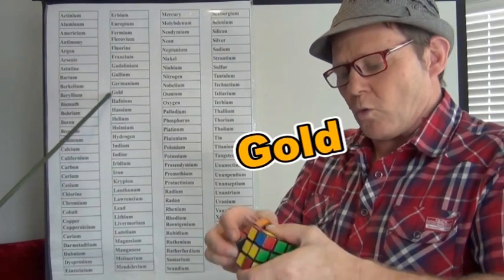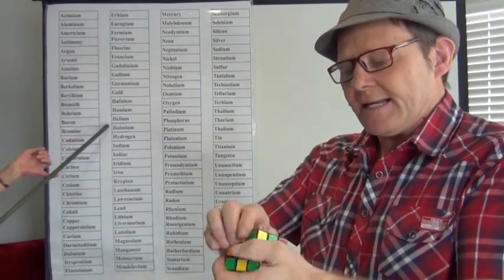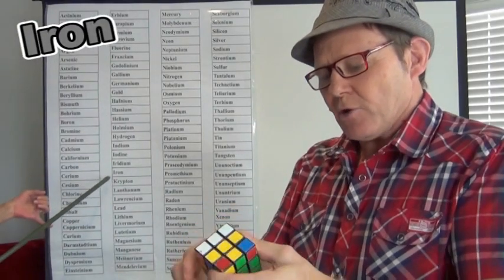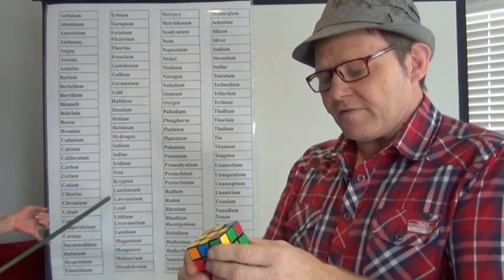Fluorine, Francium, Gadolinium, Gallium, Germanium, Gold, Hafnium, Hassium, Helium, Holmium, Hydrogen, Indium, Iodine, Iridium, Iron, Krypton, Lanthanum.